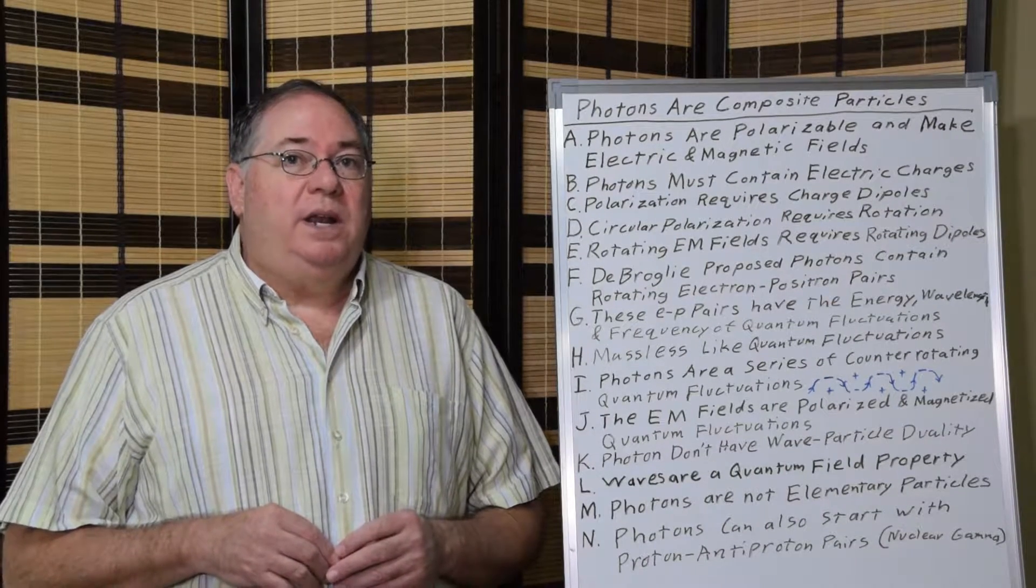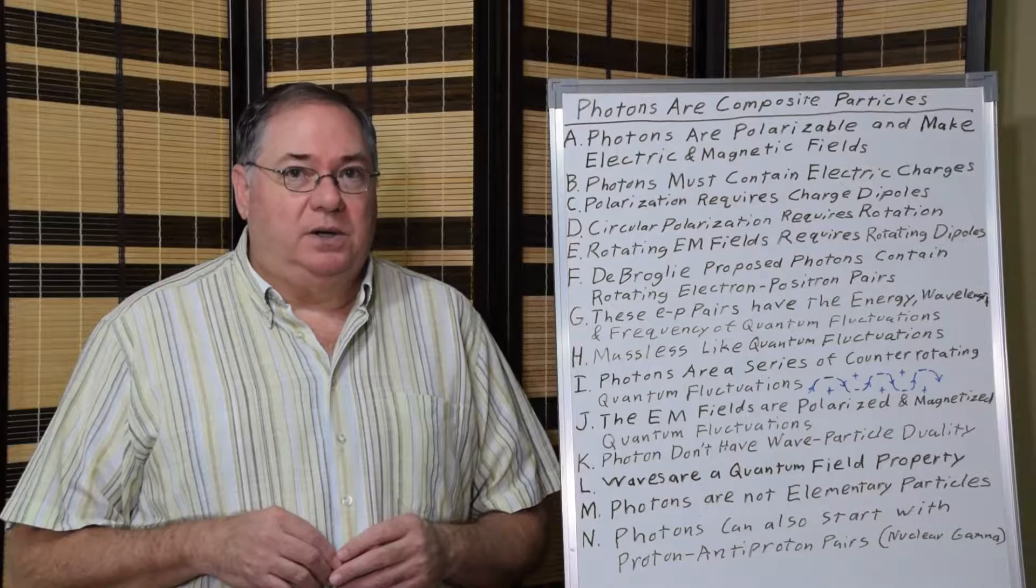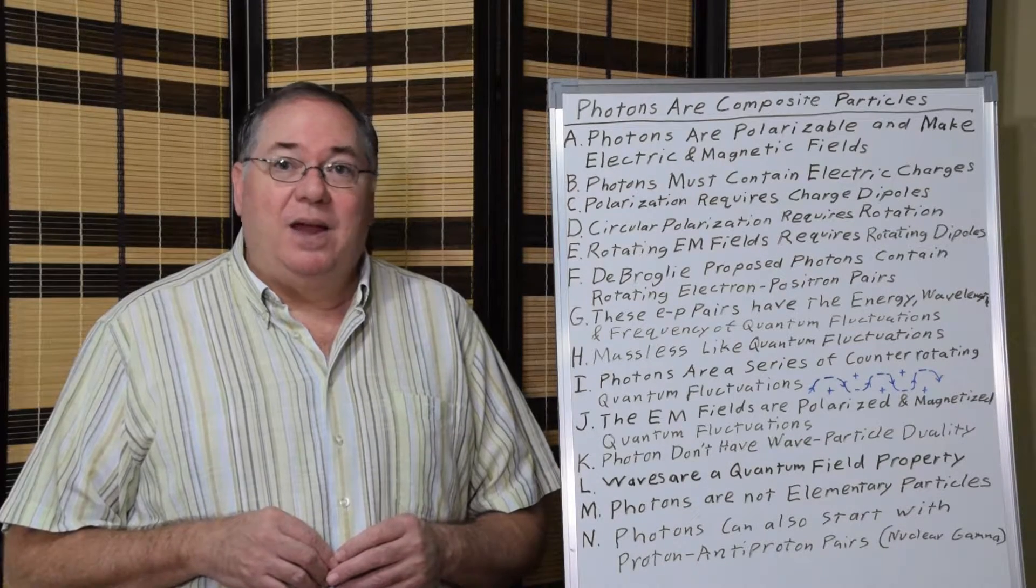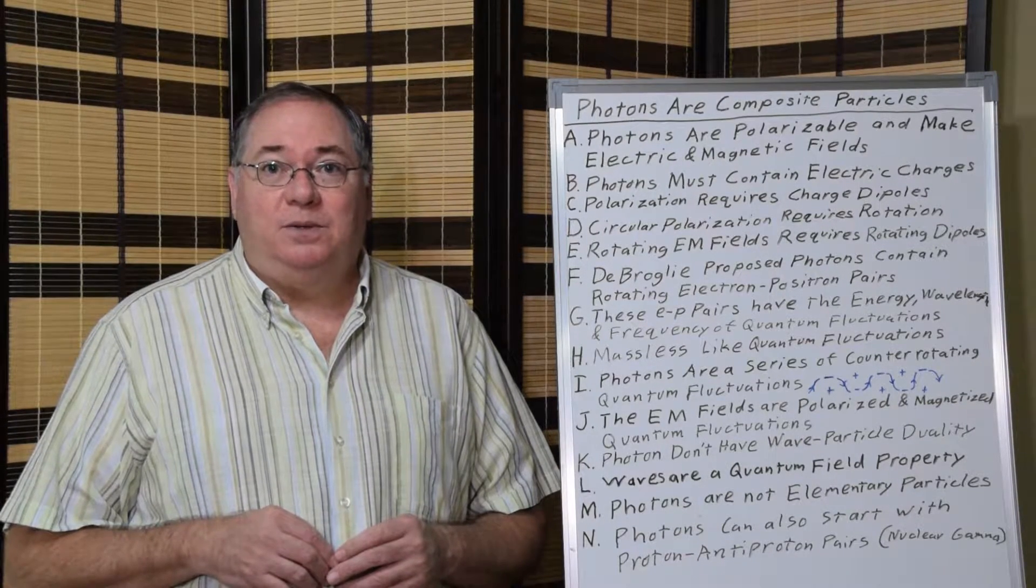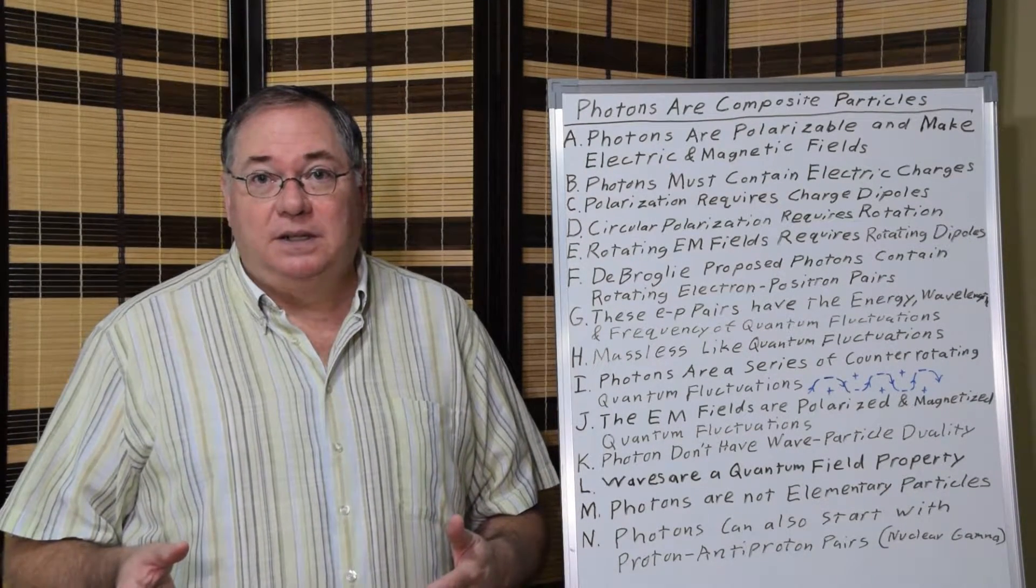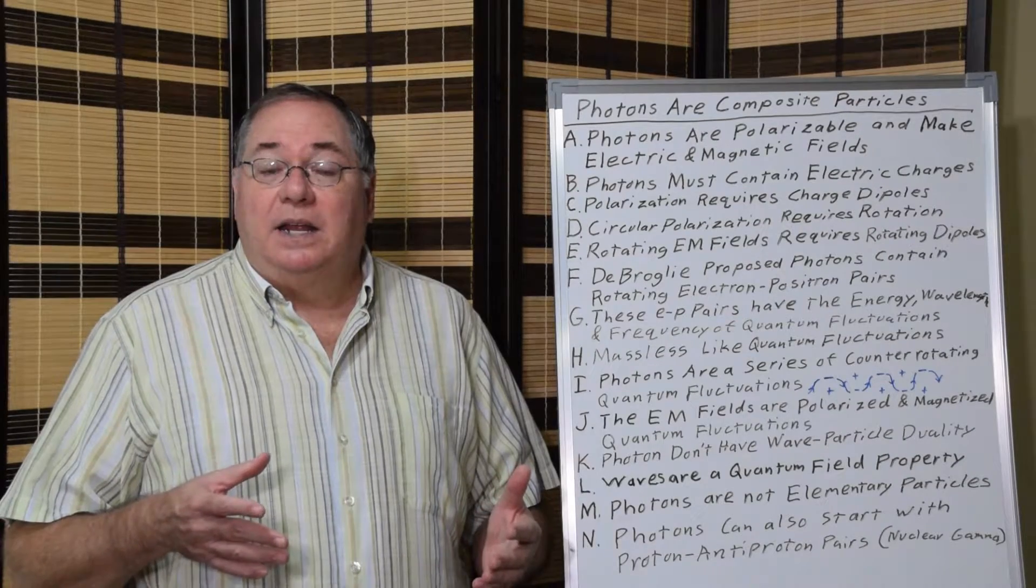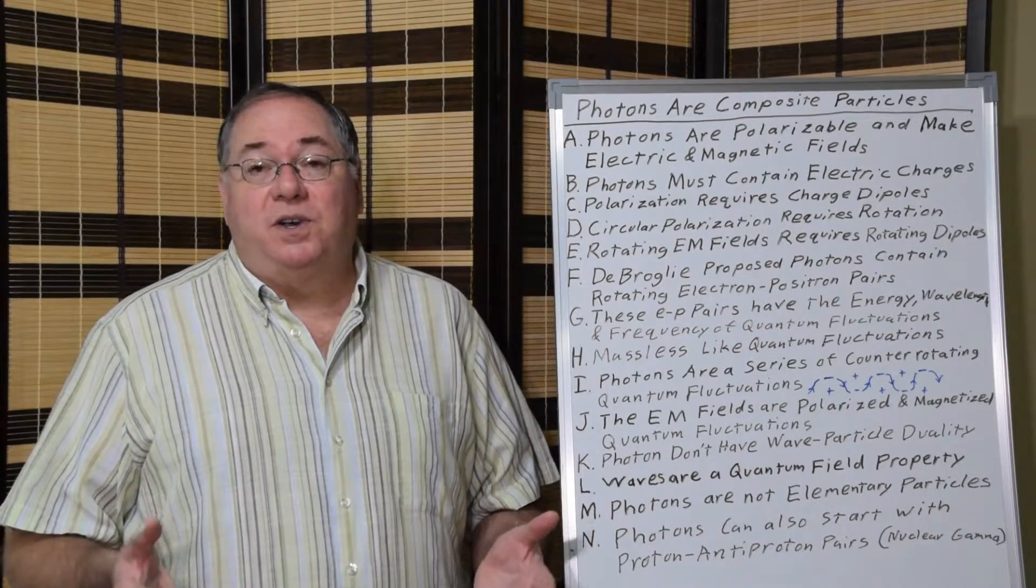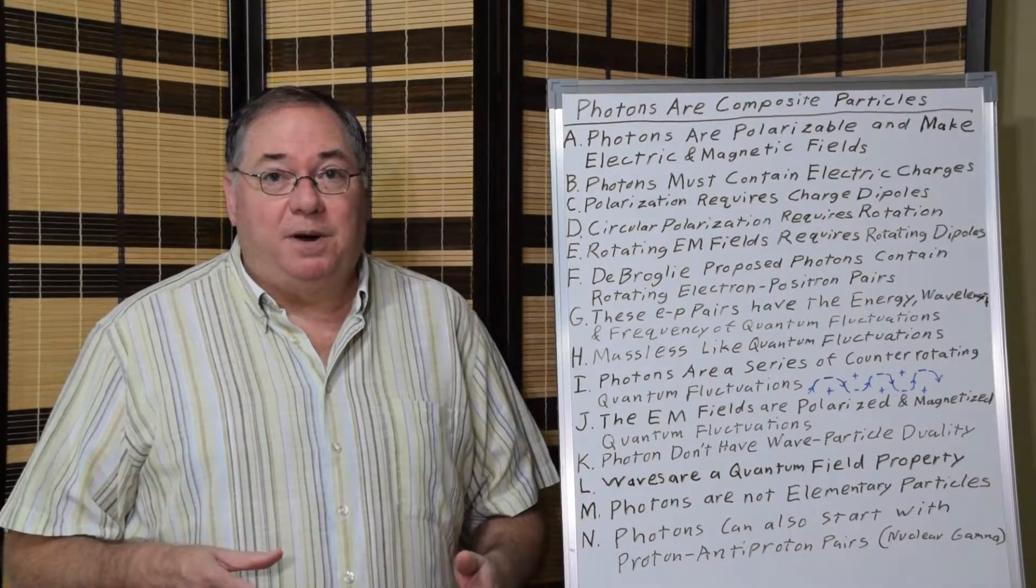In order for linear polarization to occur, you have to have an electric charge dipole. Polarization requires positive and negative charges, so you have to start with electric charges in order for any of those properties to happen.